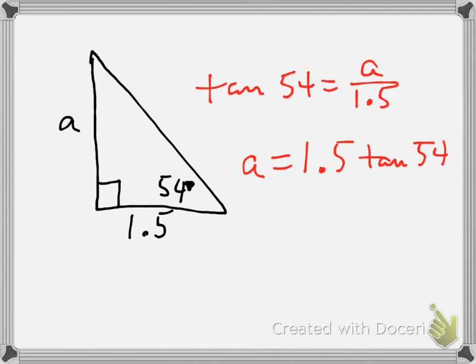So 1.5 times tangent 54 is approximately 2.1. So there's my apothem.